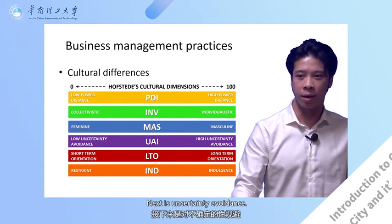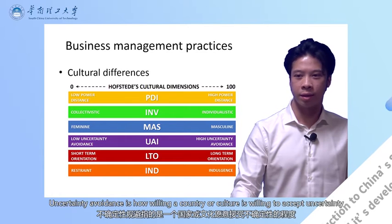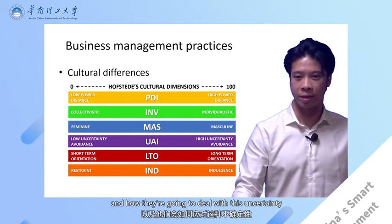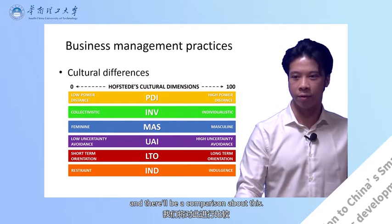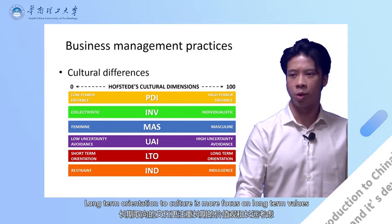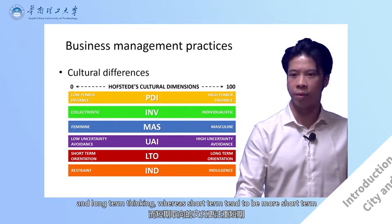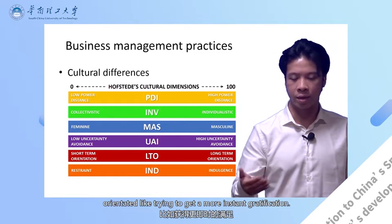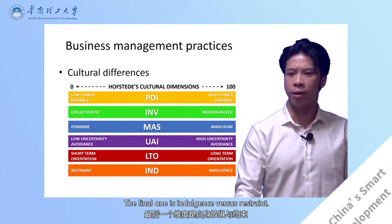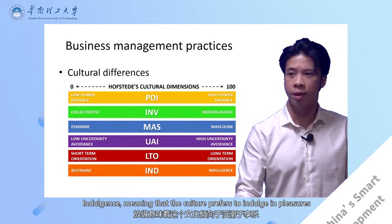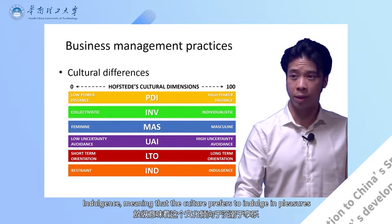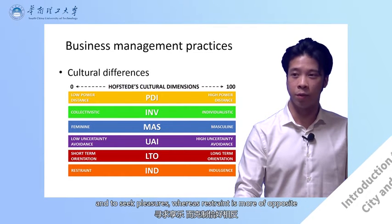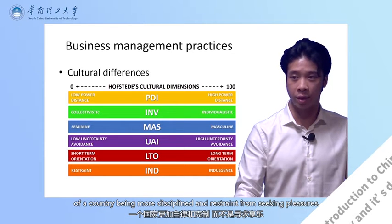Another dimension is uncertainty avoidance: how willing a country or culture is to accept uncertainty and deal with it. Long-term versus short-term orientation is fairly straightforward — long-term orientation means the culture is more focused on long-term values, whereas short-term tends to be more about instant gratification. The final one is indulgence versus restraint. Indulgence means the culture prefers to seek pleasures, whereas restraint means the country is more disciplined and refrains from seeking pleasures.